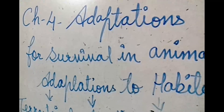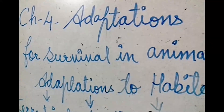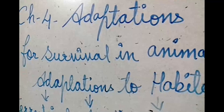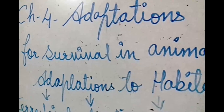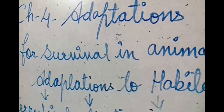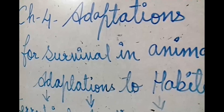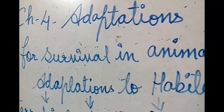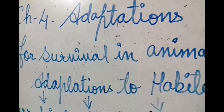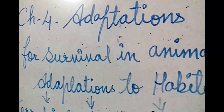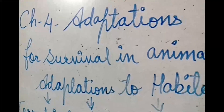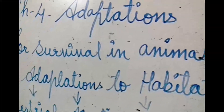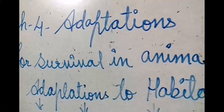Hello my dear students. I know that you are familiar with animals — you know different types of animals. In your previous class you also learned about domestic animals, wild animals, and pet animals. In this chapter we will learn about adaptation of animals: how they live and what their food-eating behavior is. Chapter number four: Adaptations for Survival in Animals.